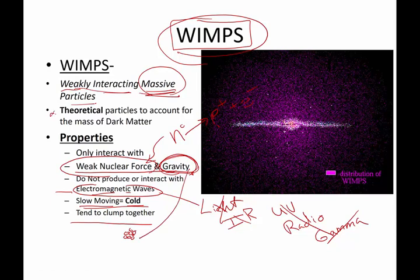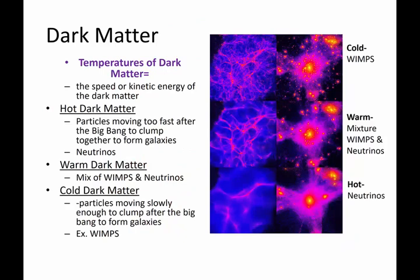WIMPs are theoretical at the moment, and there are many experiments underway right now to try to determine if there really are WIMPs and what kind of WIMPs they are. I know it sounds like a cartoon, but this is real science. We're trying to figure out if dark matter is hot, warm, or cold — referring to fast-moving, medium-moving, or slow-moving particles.